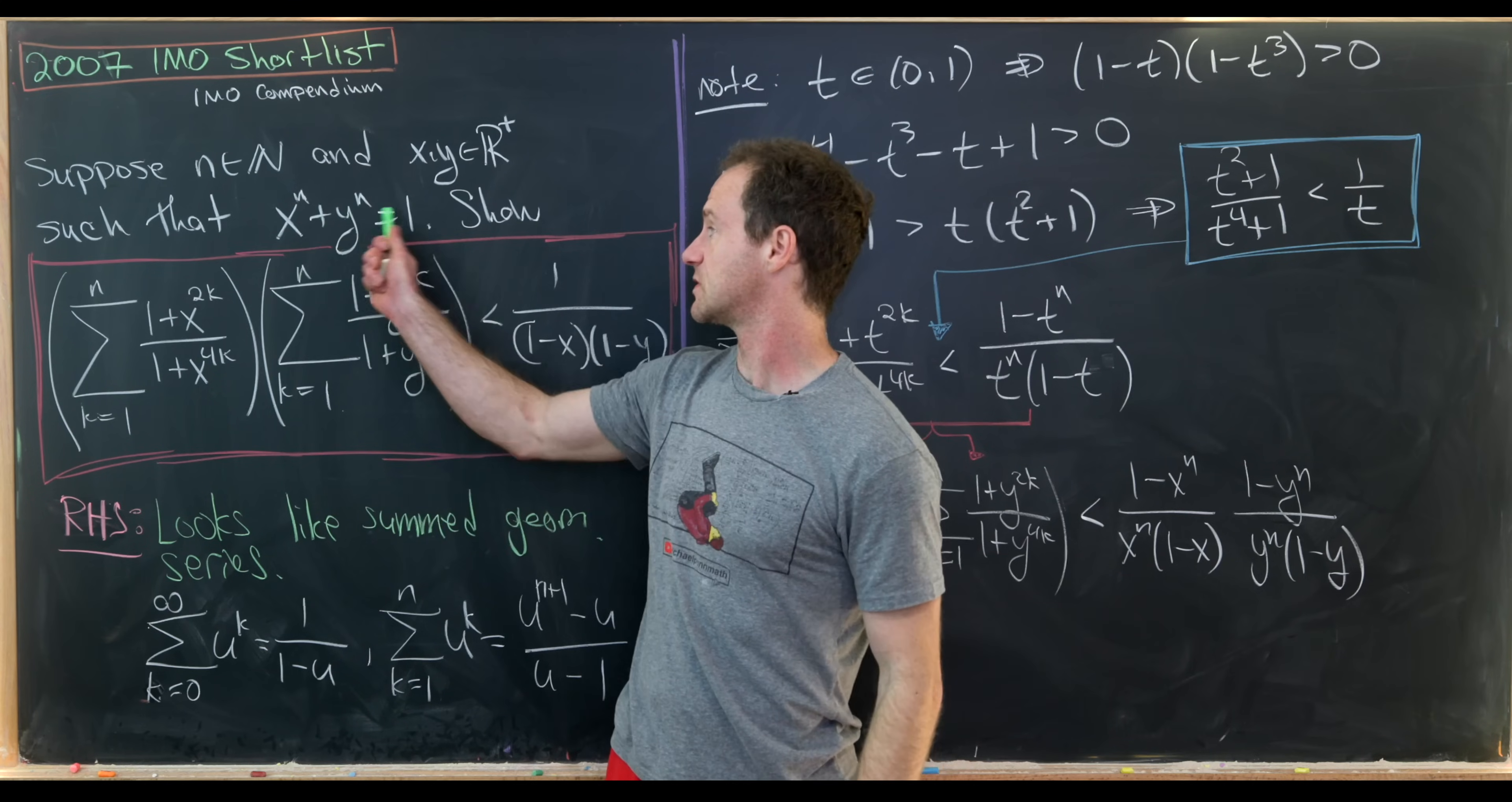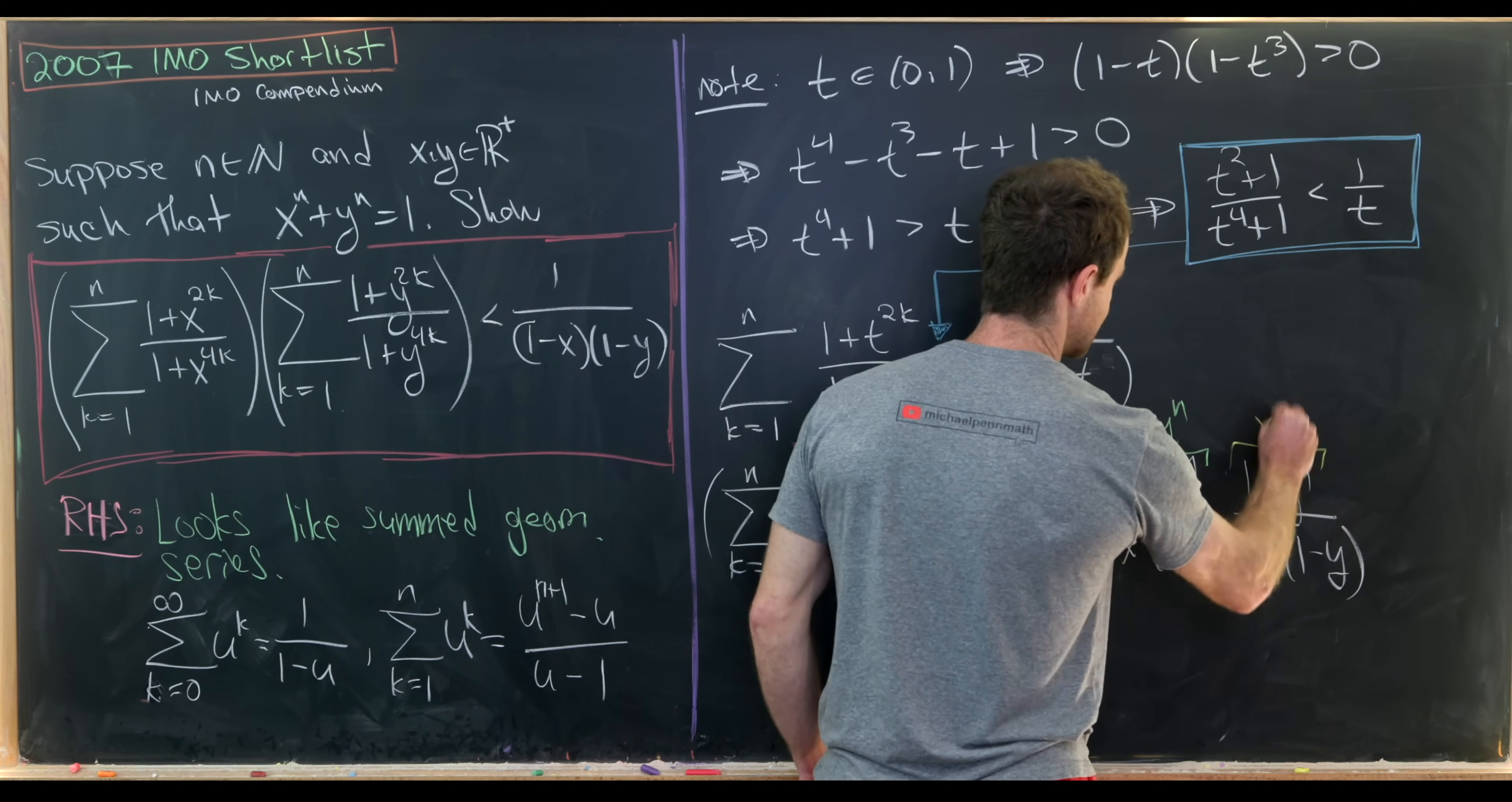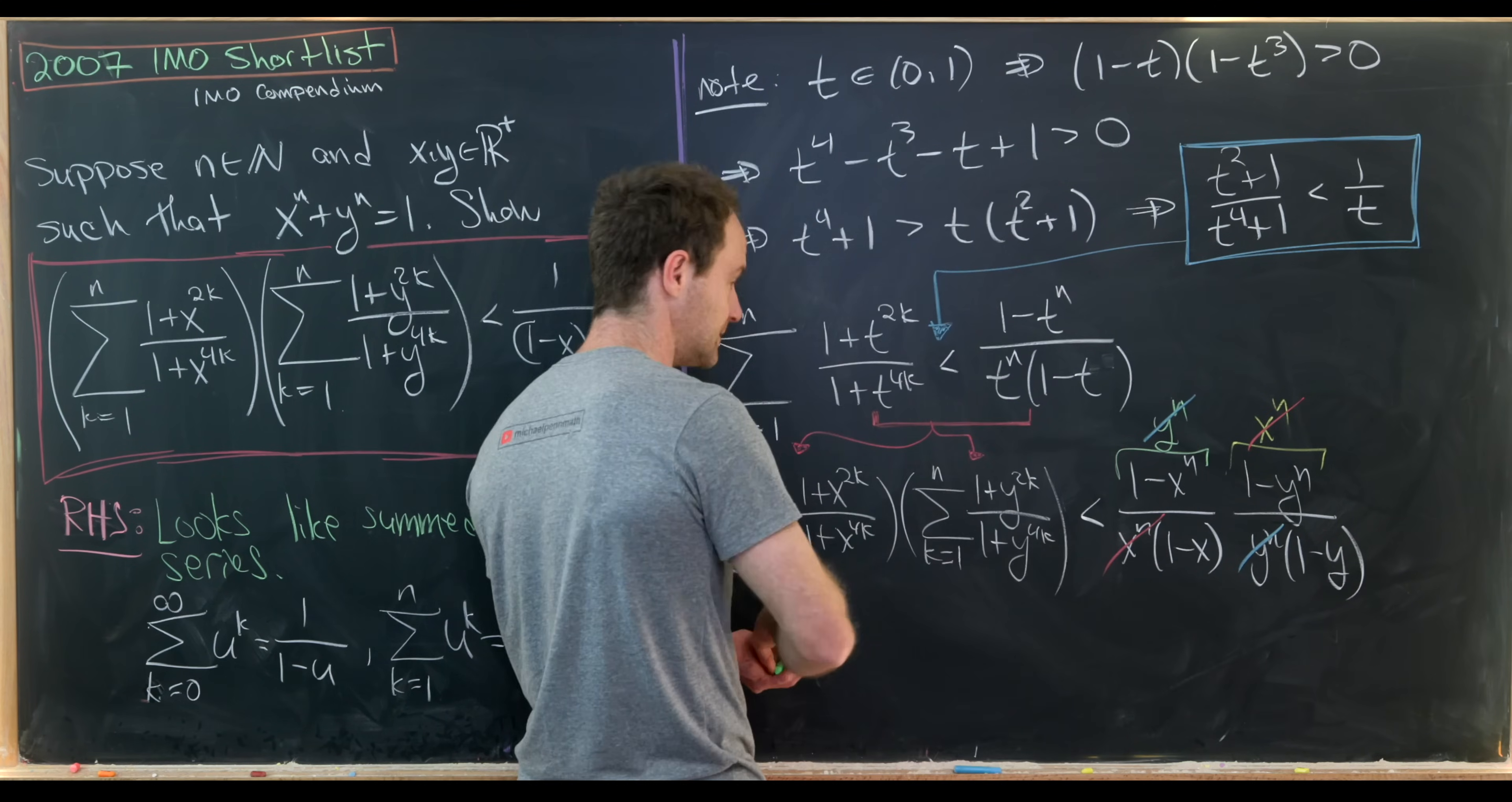So notice if x to the n plus y to the n is 1, then 1 minus x to the n is equal to y to the n. And likewise, 1 minus y to the n is equal to x to the n. Setting up some nice cancellation of the y to the n's and the x to the n's.